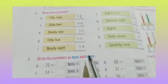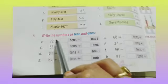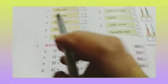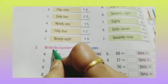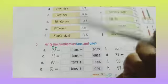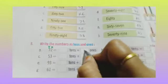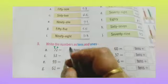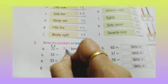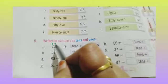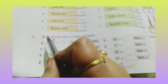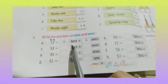So children, copy this in your book in a very neat and clean handwriting, and we will do question number 5 — write the numbers at tens and ones. With the help of a colored pencil, write ones and tens. So 2 at the ones place and 7 at the tens place. We start place value from the right-hand side. So ones and tens: 7 tens plus 2 ones.